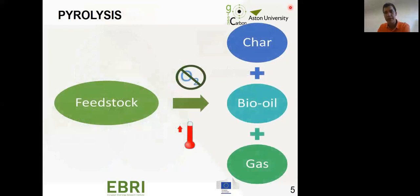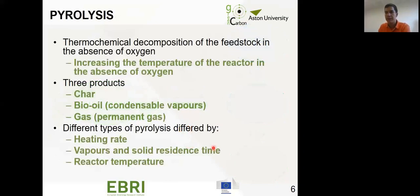We have one process called pyrolysis which could be a good solution because it's renewable, flexible with feedstock, and can produce fuel or energy. But what's pyrolysis? This is a scheme of what it does. We have the feedstock, the raw material, then we increase the temperature in the absence of oxygen to have three products: char, bio-oil, and gas. The proper definition is thermochemical decomposition of feedstock in the absence of oxygen.